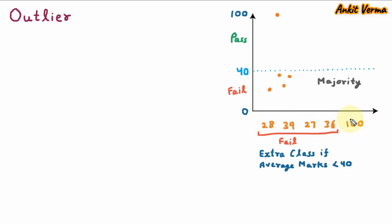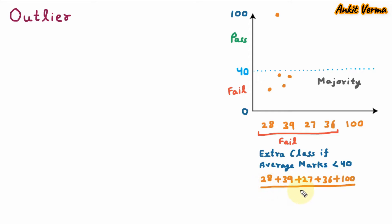But here one more student is available who is having 100 marks. As per the decision of management, we need to calculate the average marks. So 28 plus 39 plus 27 plus 36 plus 100 divided by 5 equals 230 divided by 5, which is equal to 46. This is strange — there are 5 students, out of which 4 are having less than 40 marks. They are fail, but their average is coming 46, which is more than 40.